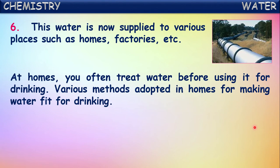At homes, water is often treated before drinking using various methods. Water is commonly boiled before drinking - boiling kills the germs and bacteria present in the water. Water is also filtered using different sieves and filters. In this way, various methods are used at home for making water fit for drinking.